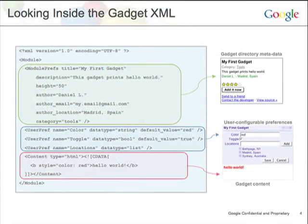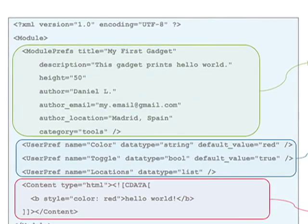Here's a more in-depth look at the different parts of the gadget XML spec. The first child element under the module root tag is the ModulePrefs XML element. This is where you specify all your gadget metadata. When you submit your gadget to the iGoogle directory, this is where you specify information like title, description, screenshot, thumbnail, and the width and height of your gadget. Including this metadata is very important — it helps users search for and find your gadget in the directory, making it more discoverable, which means more people will add it.